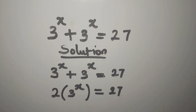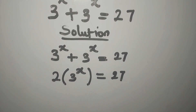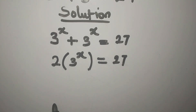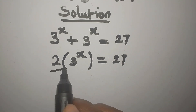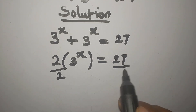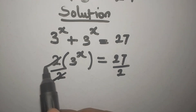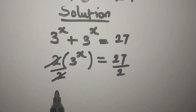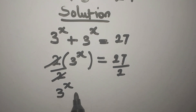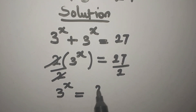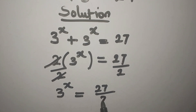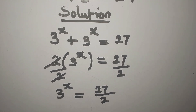The next step is to divide both sides by 2. So I'll divide this by 2 and divide this by 2 — the 2 will cancel out — so we're going to have 3 to the power of x equal to 27 divided by 2.